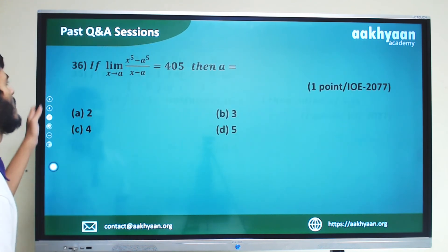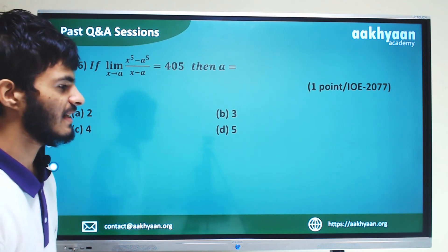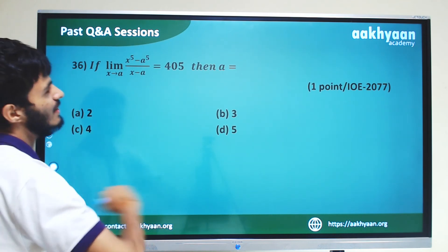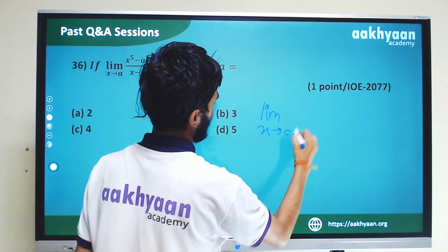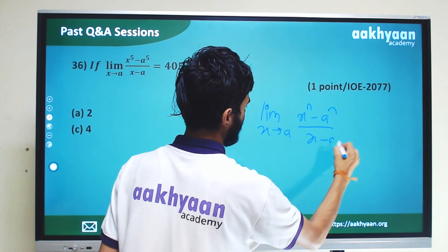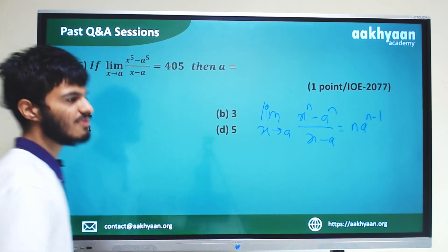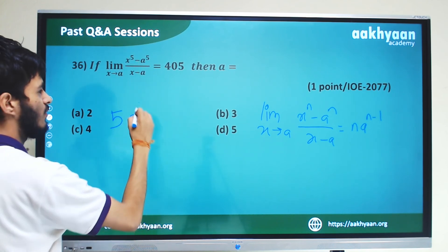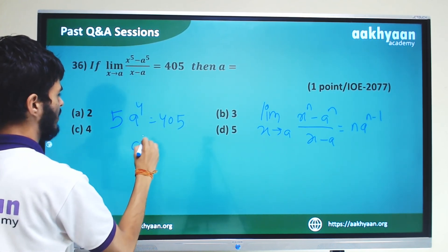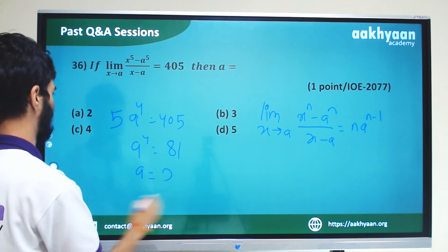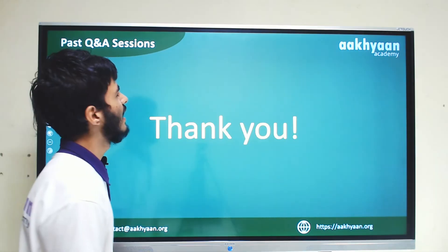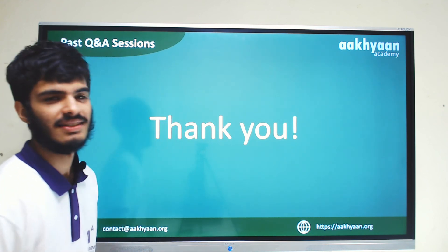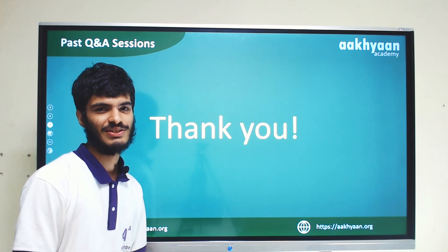In the 36th number equation, limit x tends to a of x to the power 5 minus a to the power 5 by x minus a, using the standard formula limit x tends to a of x to the power n minus a to the power n by x minus a equals n times a to the power n minus 1. Here n equals 5, so the answer is 5 times a to the power 4. In the next lecture, we will deal with the most important equations for the limit and continuity chapter. Thank you.